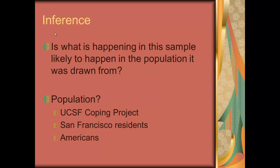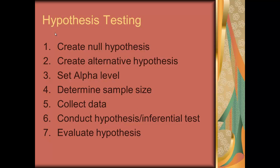When we talk about making inferences, we're talking about hypothesis testing. There are seven steps: create a null hypothesis, create an alternative hypothesis, set your alpha level, determine sample size, collect data, conduct the inferential test, and evaluate the hypothesis.